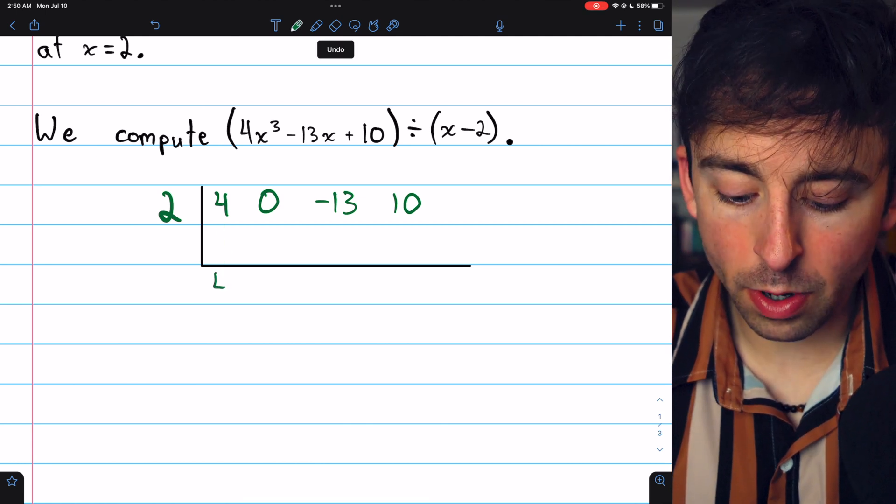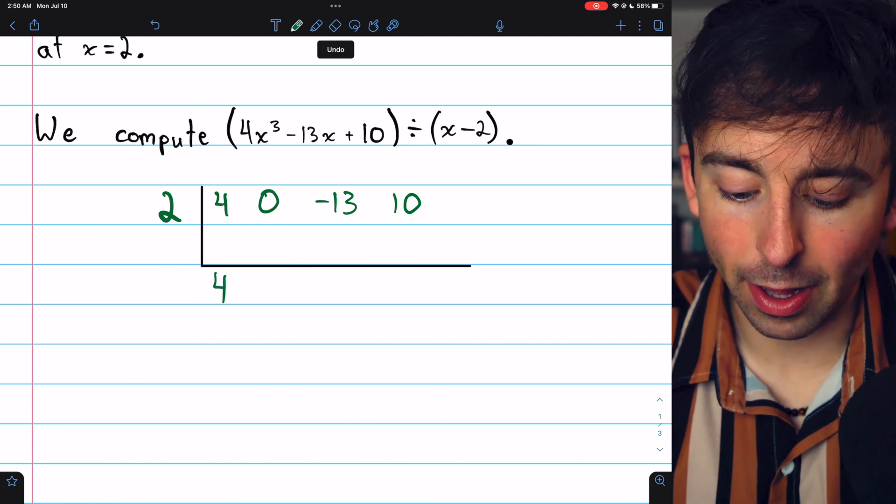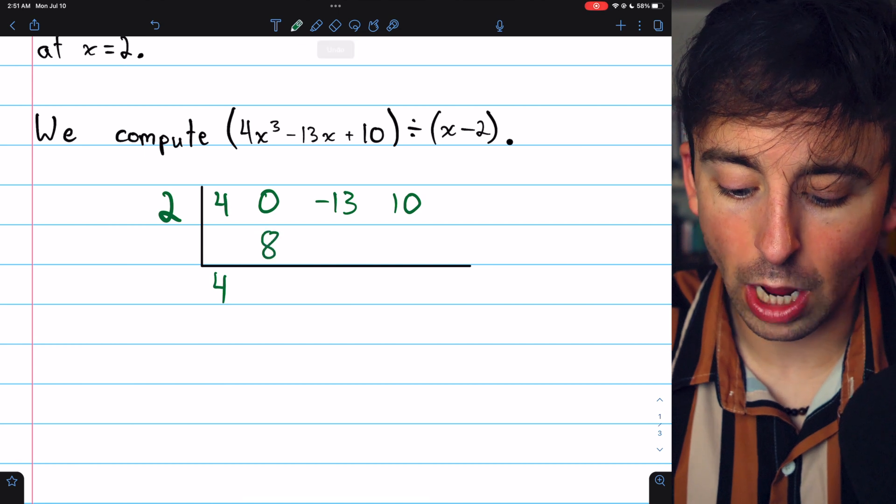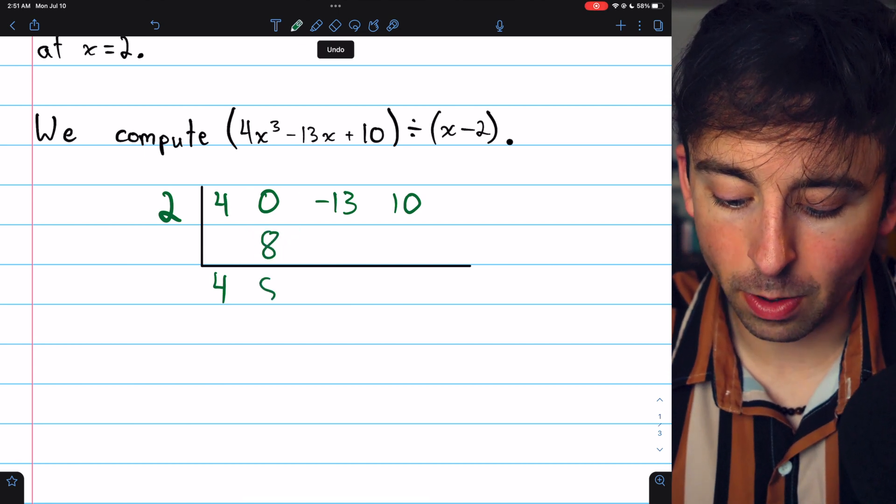Then just carry out the synthetic division process. Bring that 4 down, multiply it by the k value, and then write it up here. 2 times 4 is 8. Add those together, that's 8.